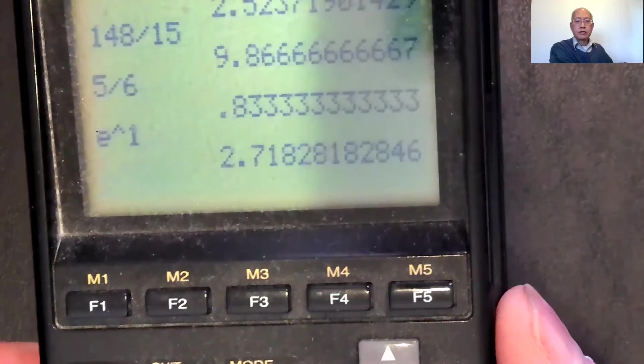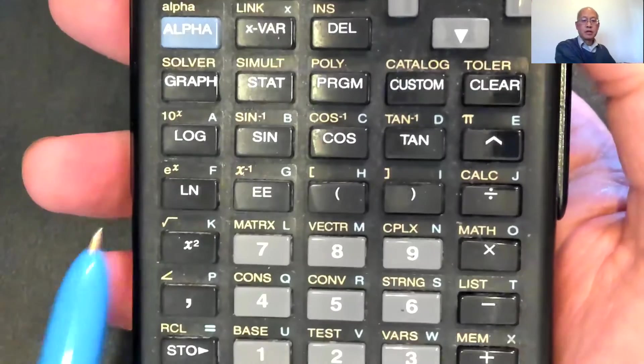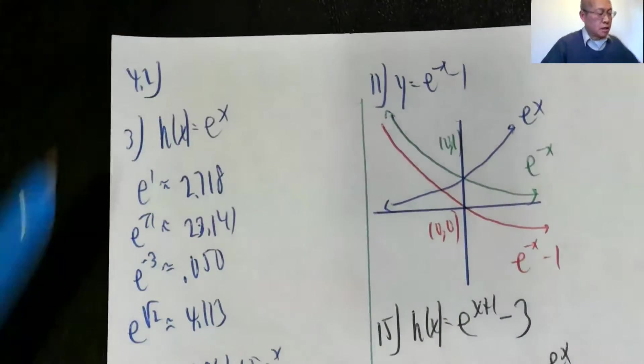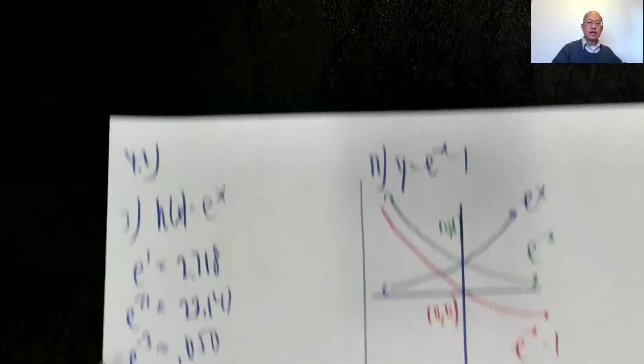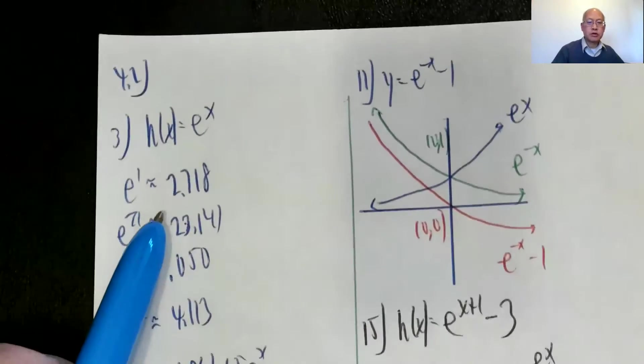So e also goes on, 2.718, so it's roughly 2.7. Okay, it's normally paired with ln, and there's e to the x. Okay, so just some practice plugging in stuff with the e, e to the first I just showed you was 2.718.